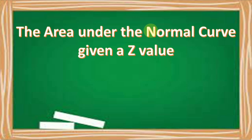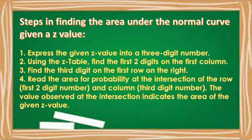Let us discuss the area under the normal curve given a z-value. The steps in finding the area under the normal curve given a z-value are: number 1, express the given z-value into a three-digit number; number 2, using the z-table, find the first two digits in the first column; number 3, find the third digit in the first row; and number 4, read the area or probability at the intersection of the row and column. The value observed at the intersection indicates the area of the given z-value.